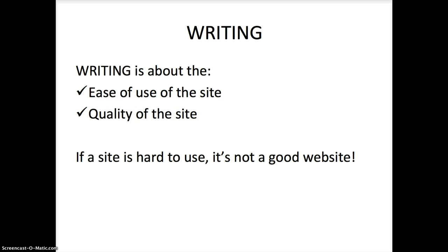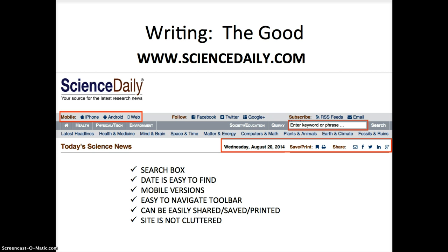Now the last criterion: writing style. Writing is simple — it's about the ease of use and quality of the site. If a site is hard to use, it's not a good website. Going back to ScienceDaily.com as a good example: it has a search box, the date is easy to find, it has a mobile version, an easy-to-navigate toolbar, it can be easily shared, saved, and printed, and the site is not cluttered. I'm not going to show a bad example because if you say 'this site is really hard to use,' you've evaluated it and given it a bad mark for writing style.